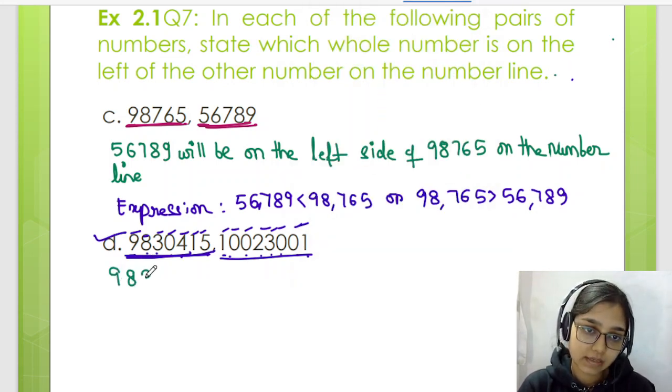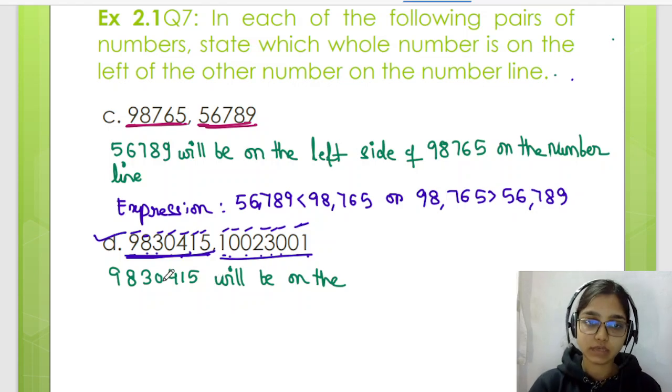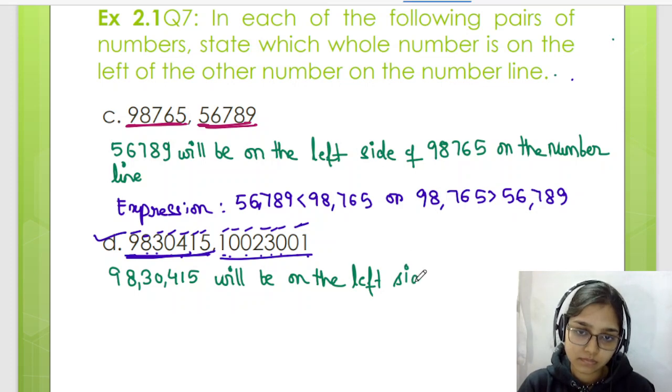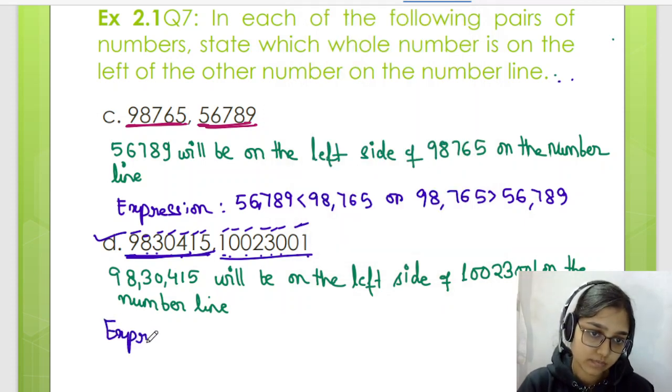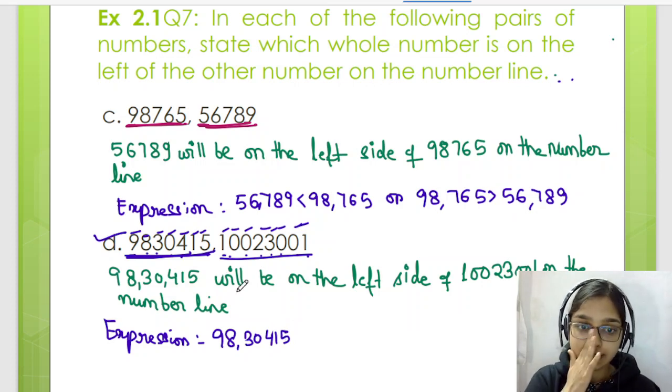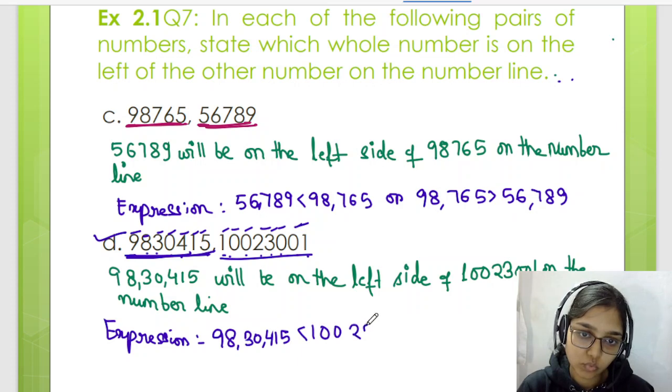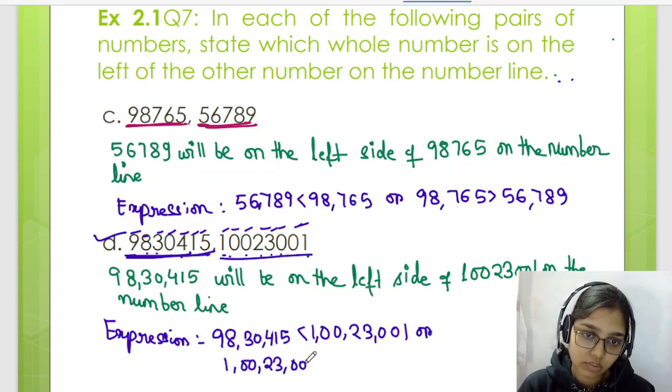9830415 will be on the left side. So 1, 10, 100, 1000, 10,000, lakh, 10 lakh. So 98 lakhs, 30,000, and 415 will be on the left side of 1,00,23,001 on the number line. And the expression would be 9830415 is less than 10023001, or 10023001 greater than 9830415.